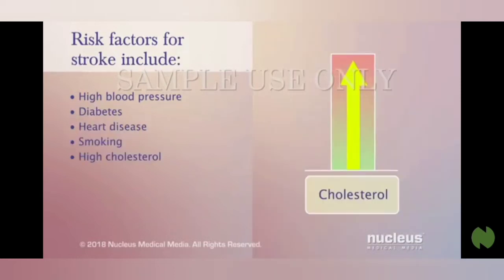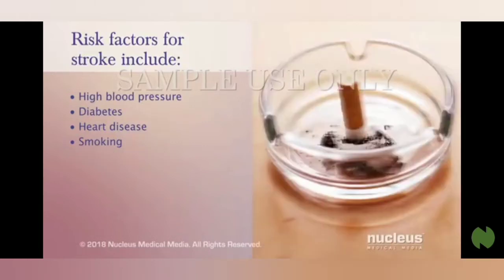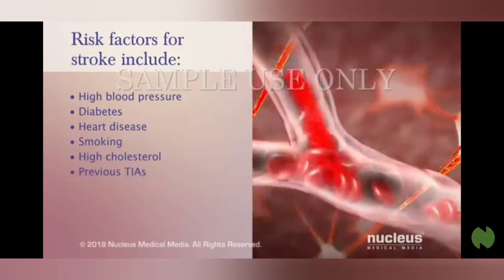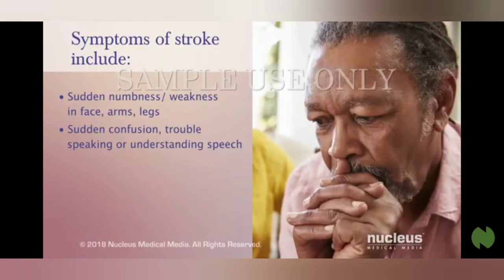High blood pressure is the main risk factor for any type of stroke. Other risk factors include diabetes, certain types of heart disease, smoking, high cholesterol, and having a previous transient ischemic attack.